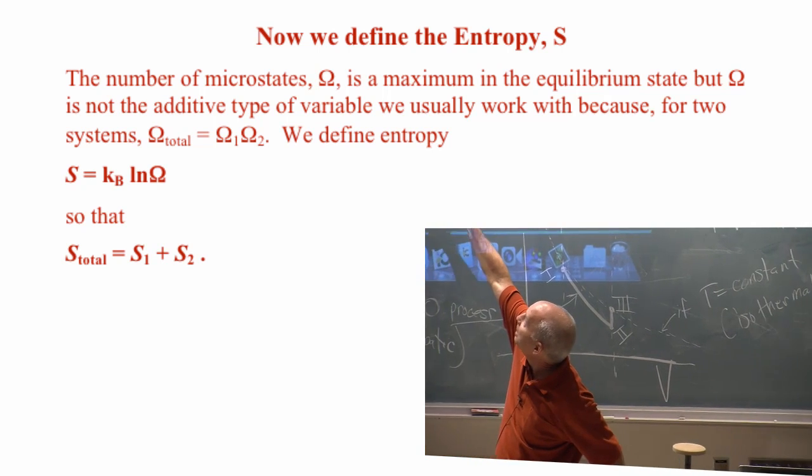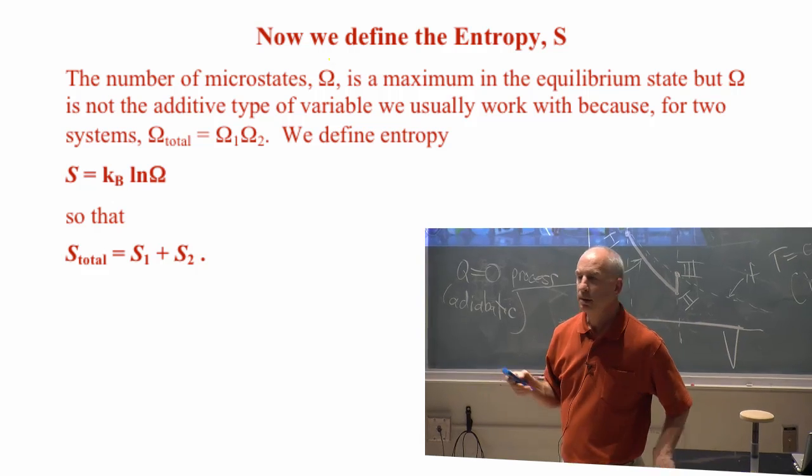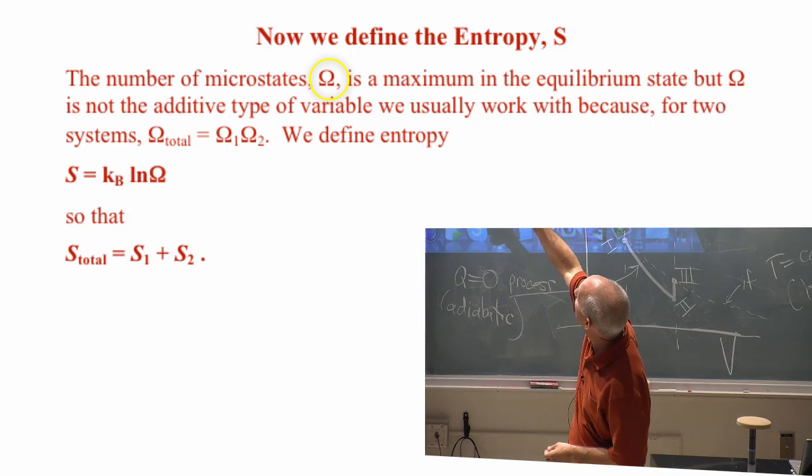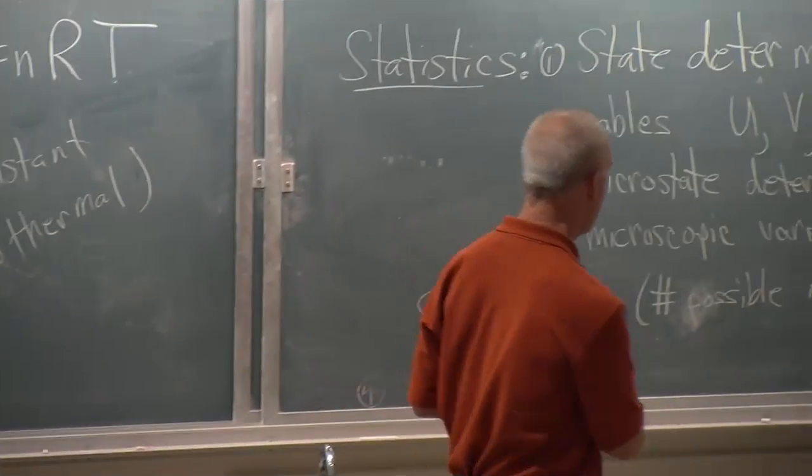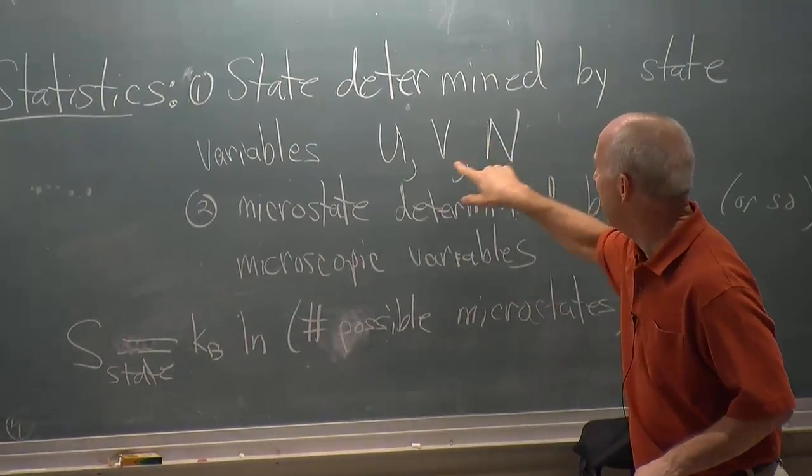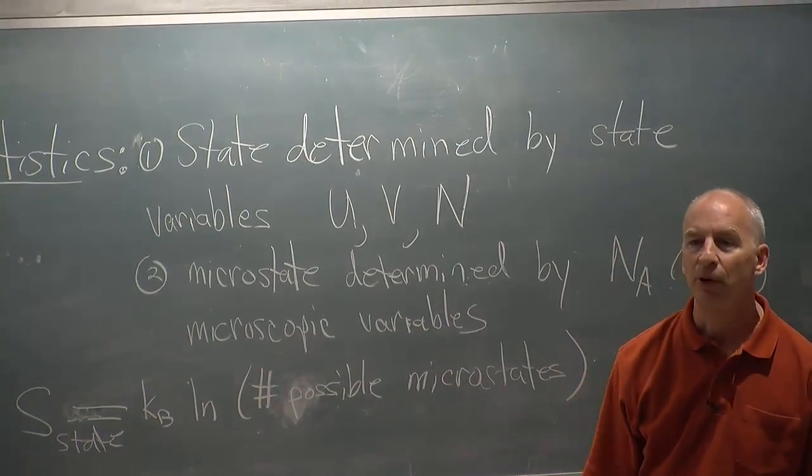That number of microstates that give you some macroscopic state we call omega. The macroscopic state is determined by energy, volume, and number of particles.